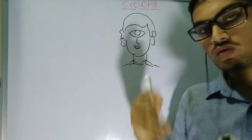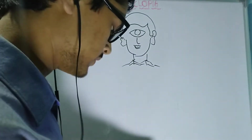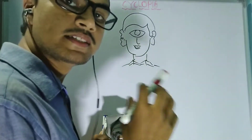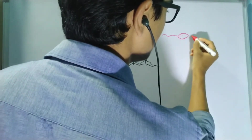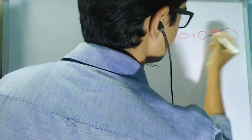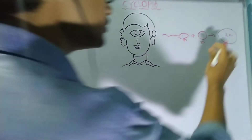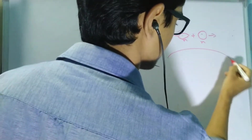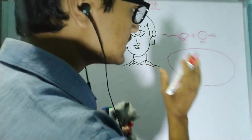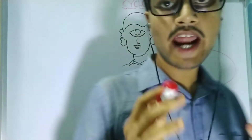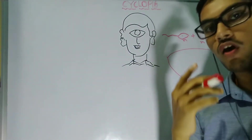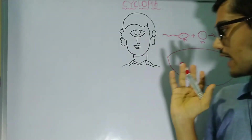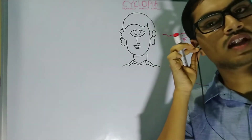Due to this developmental disorder, instead of two eyes, only a single eye will form. Now we have to understand the reason behind cyclopia — why a baby is born with a single eye. When a sperm meets with an ovum they form a zygote, and this embryo is responsible for the formation of each and every organ, including your eyes, nose, and ears.